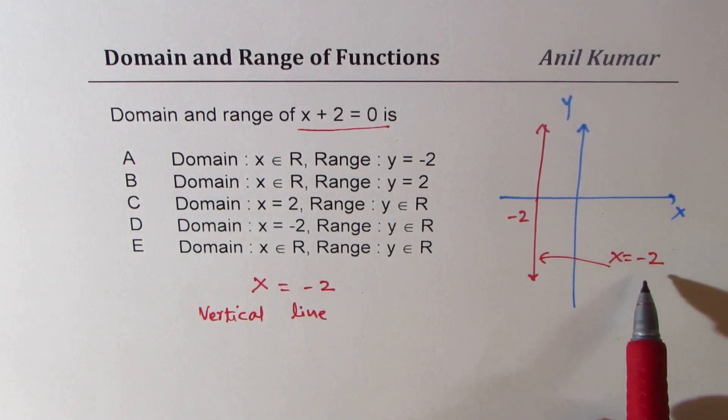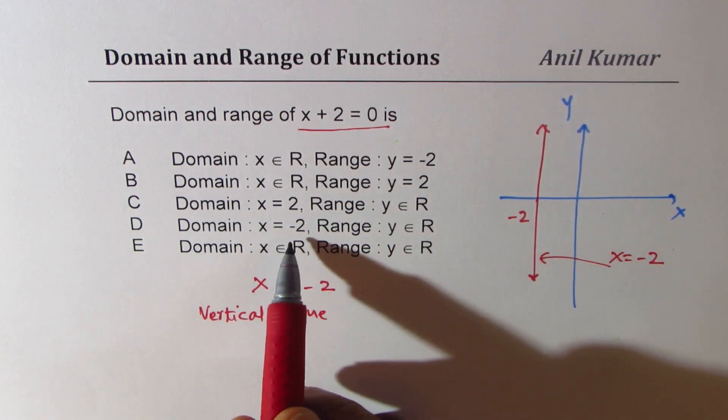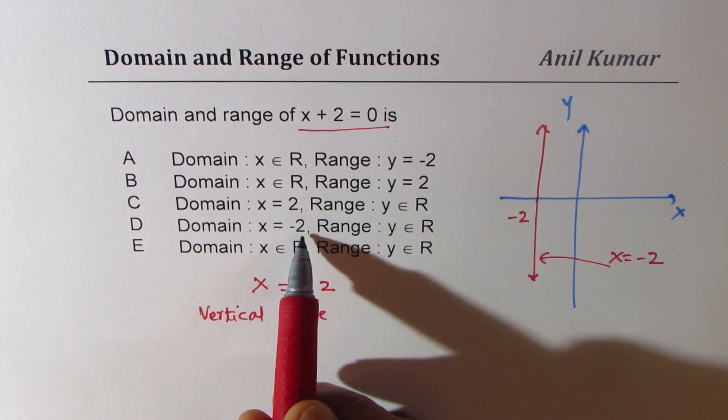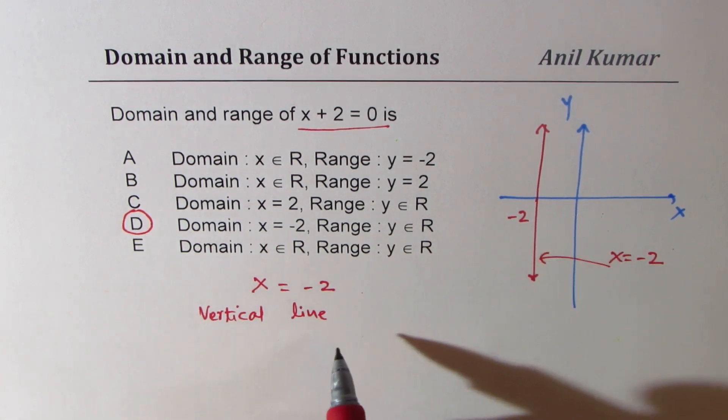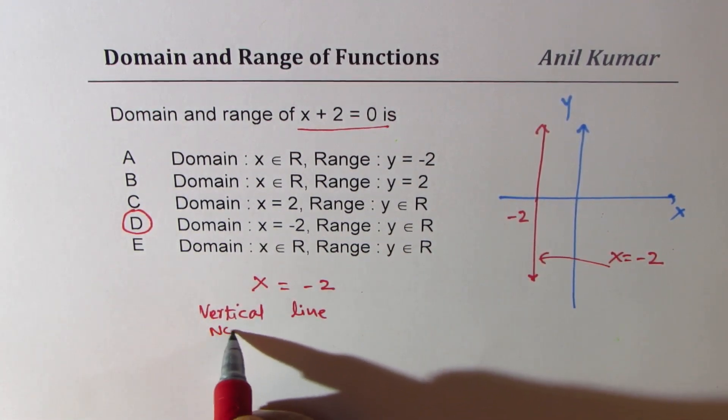Well, this line here is X equals minus 2. Now in this case, what is domain and what is range? Five options are given to you. Clearly we have a domain which includes only X equals minus 2 and range is all real numbers. Option D is correct. However, you will also know that this is not a function.